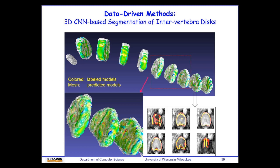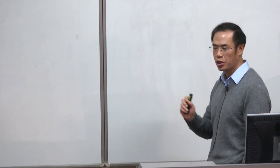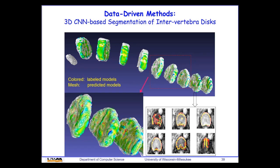In another application, we use the data-driven approach to segment intervertebral disks. We compare colored labeled models — manually segmented by experts — against our predicted models output by the trained network. In most cases, they match very well. This is confirmed by 2D slice comparisons where the red prediction and yellow labeled data align closely.